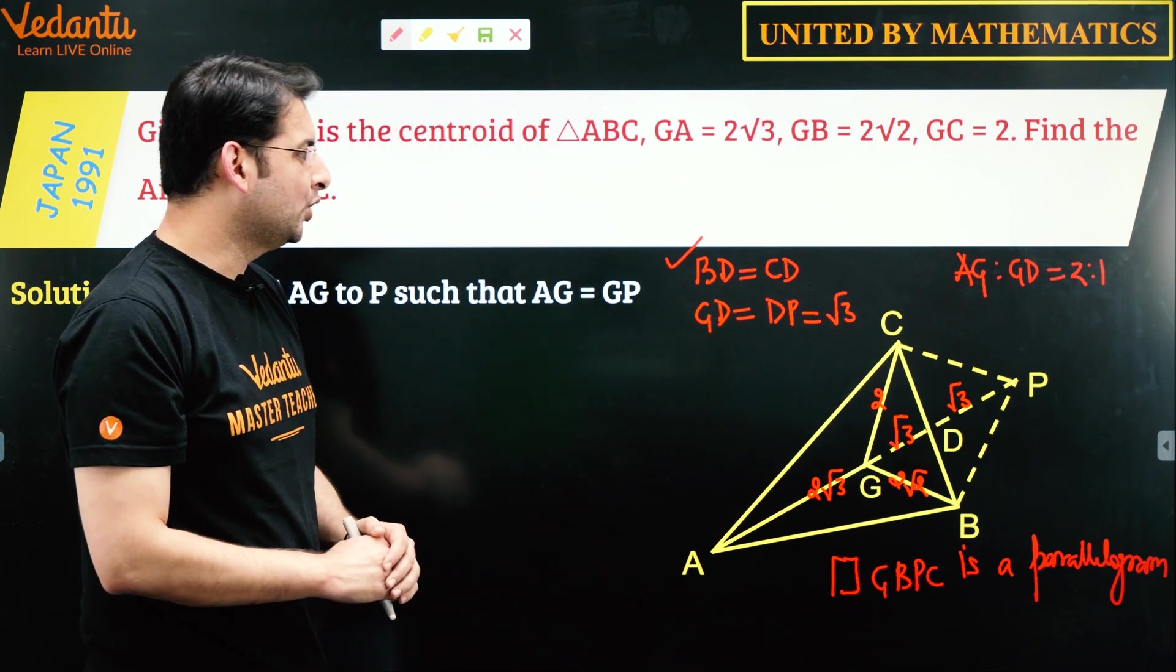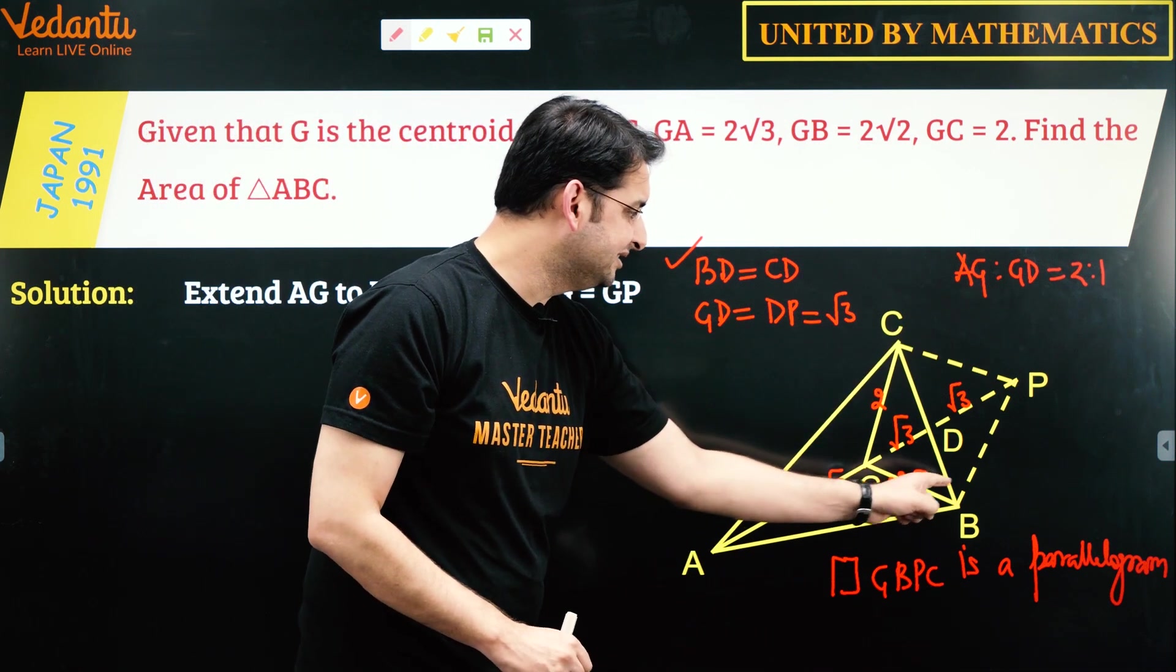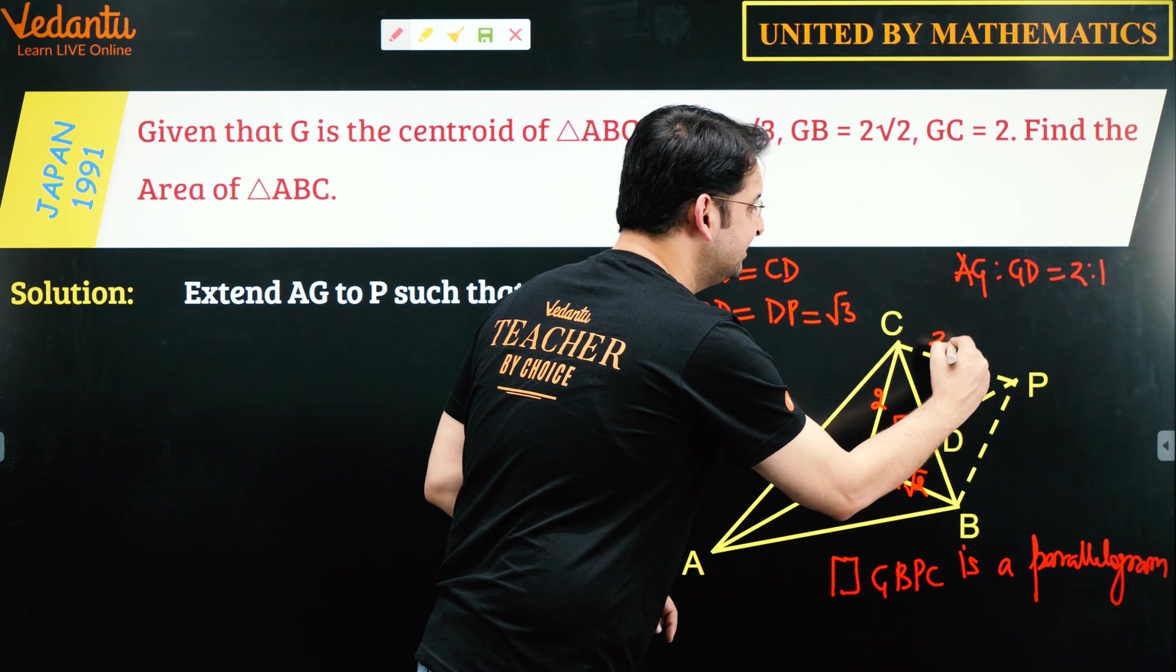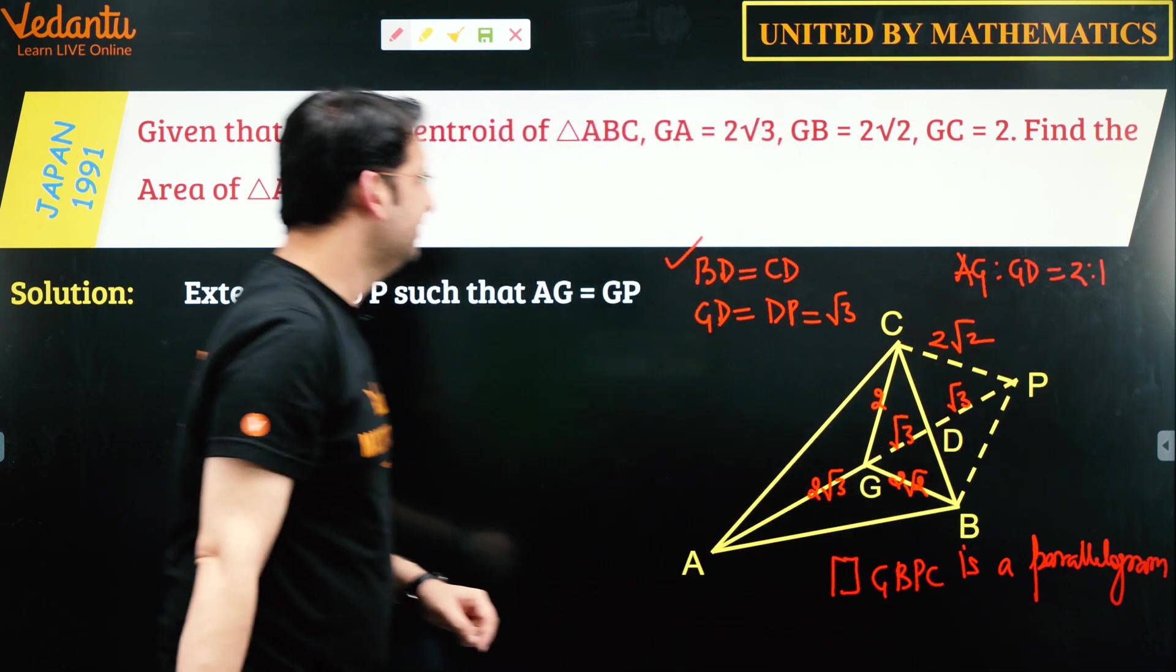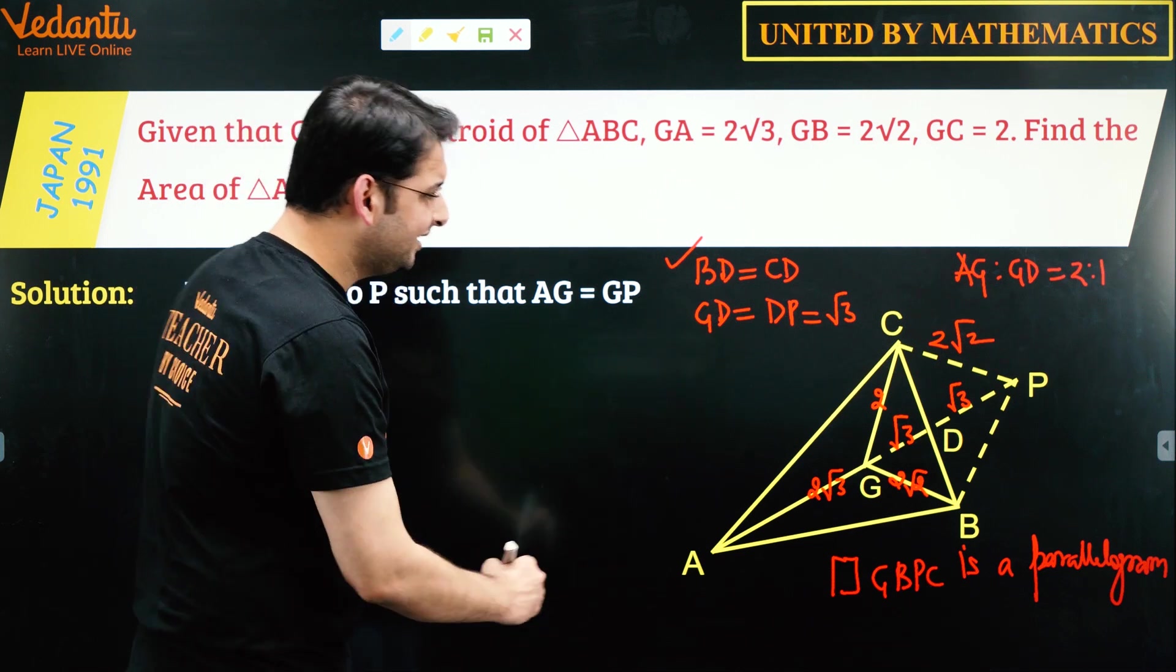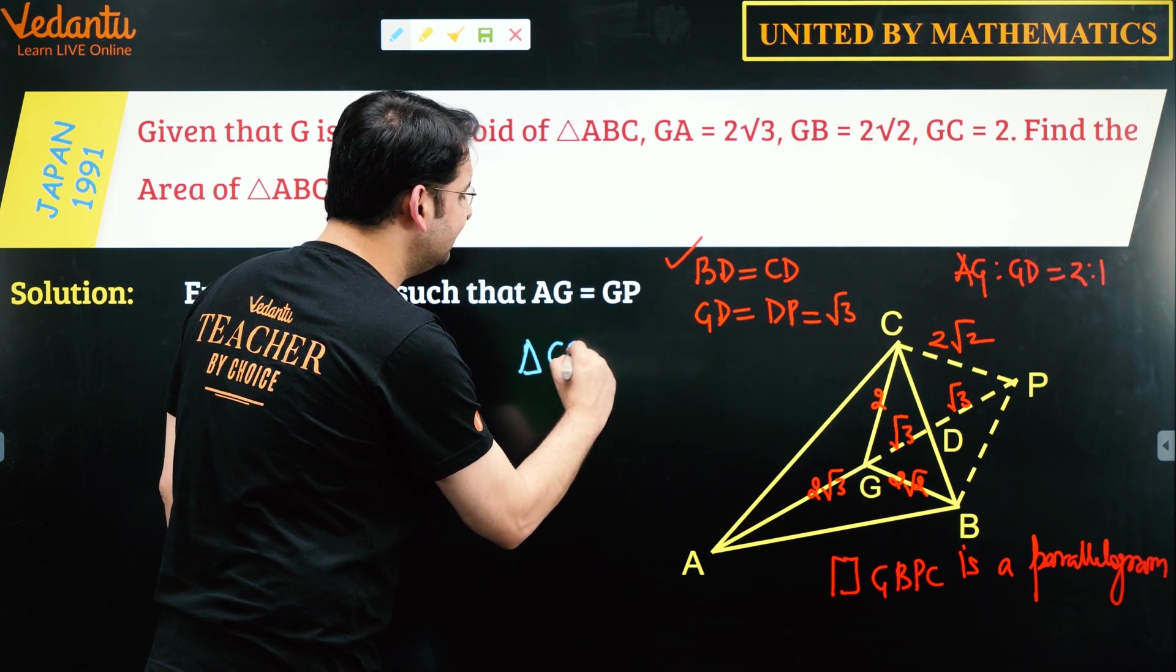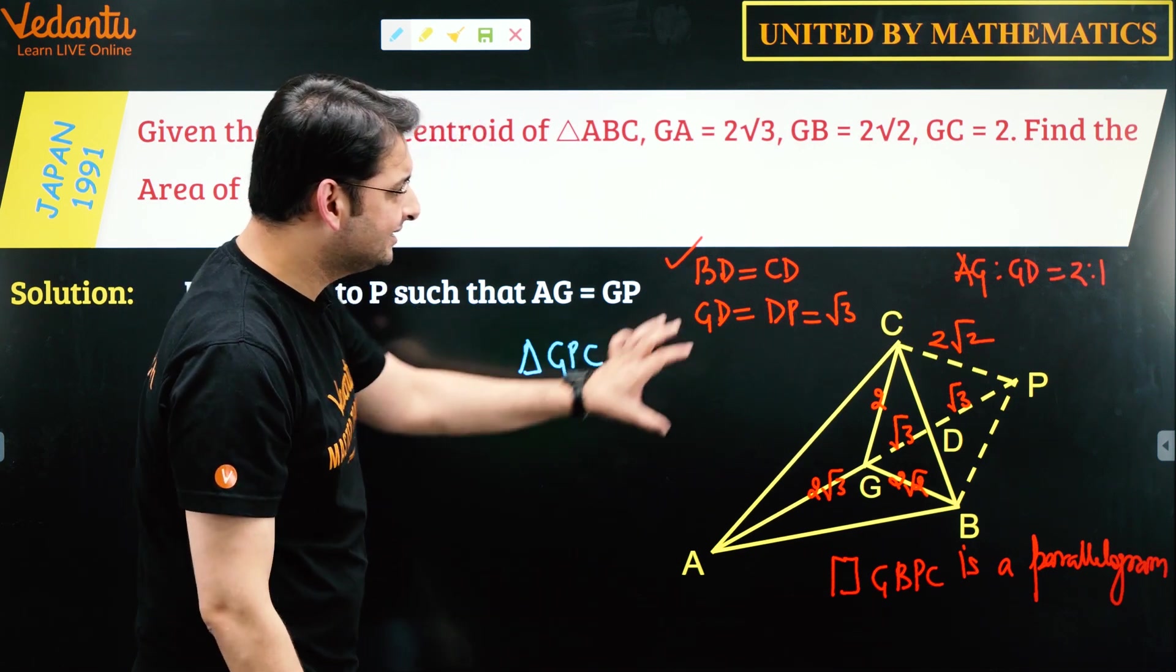So what do we have now? Since this is a parallelogram, GB is 2√2, can I say PC is also 2√2. So if we consider triangle GPC,